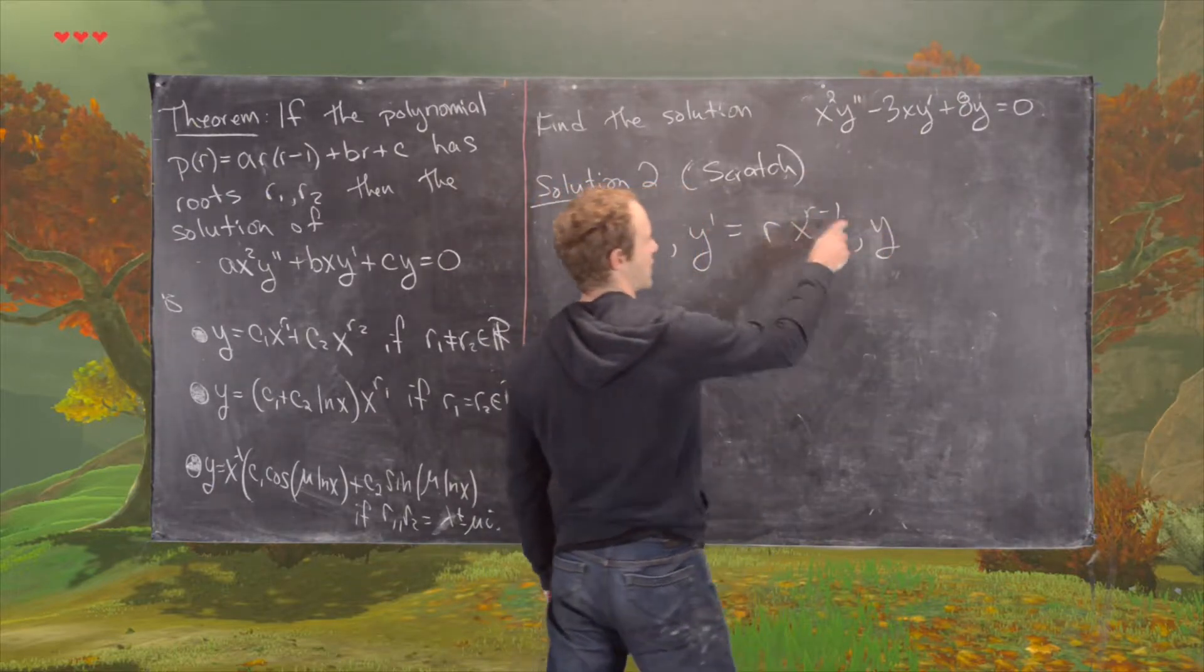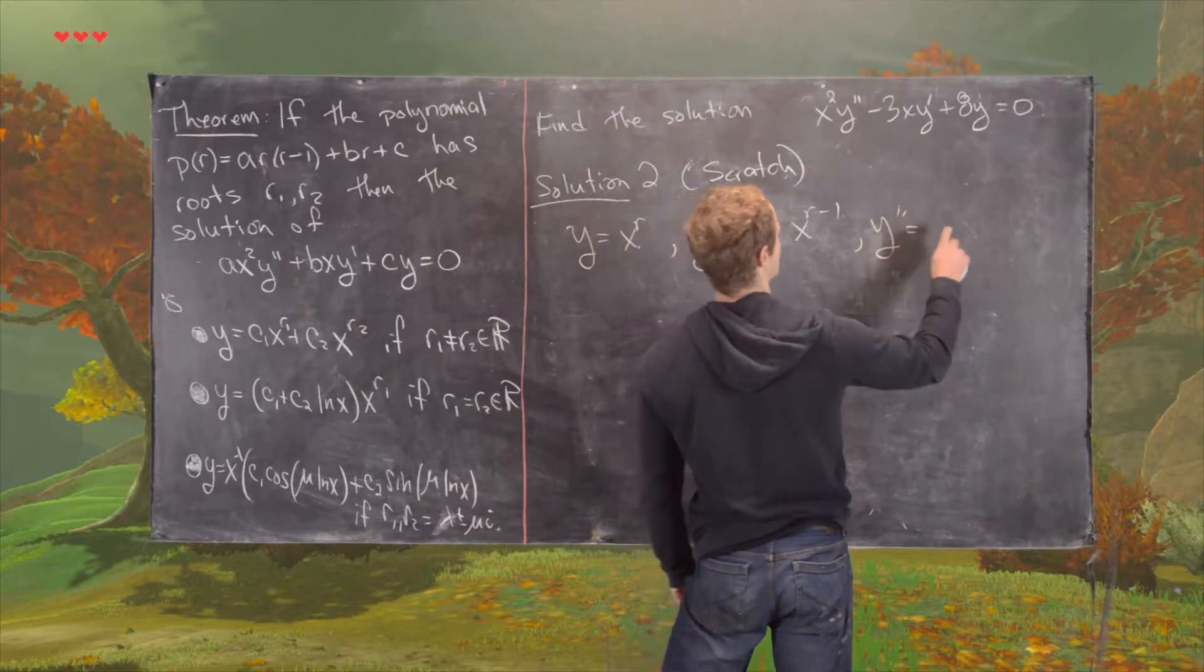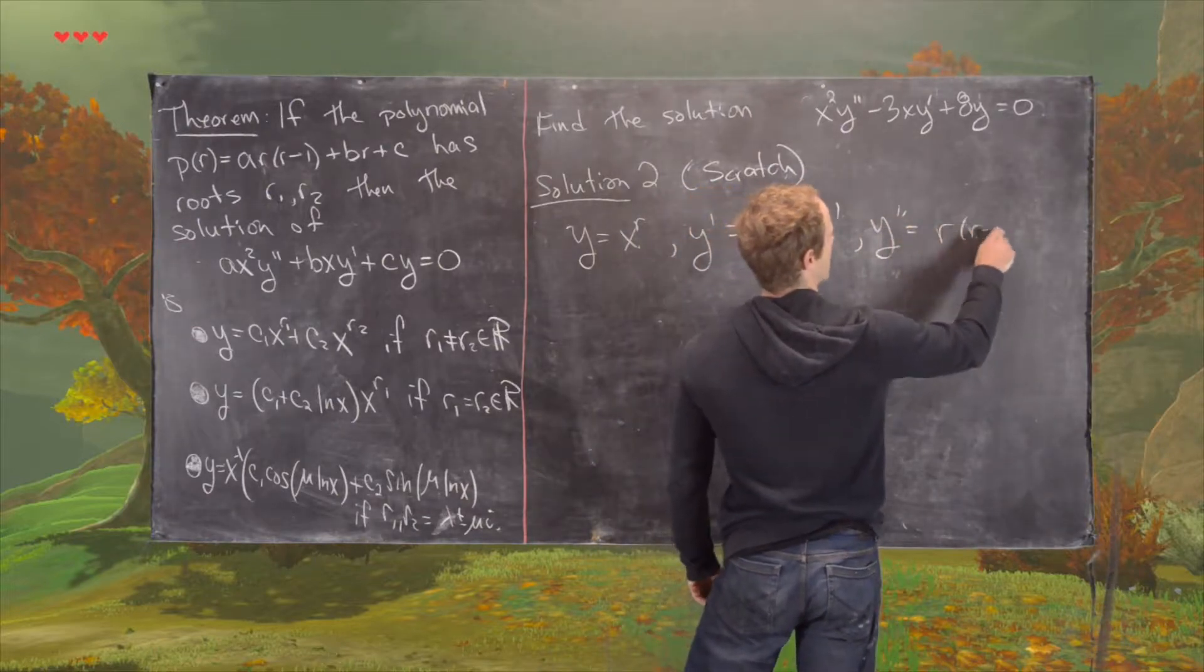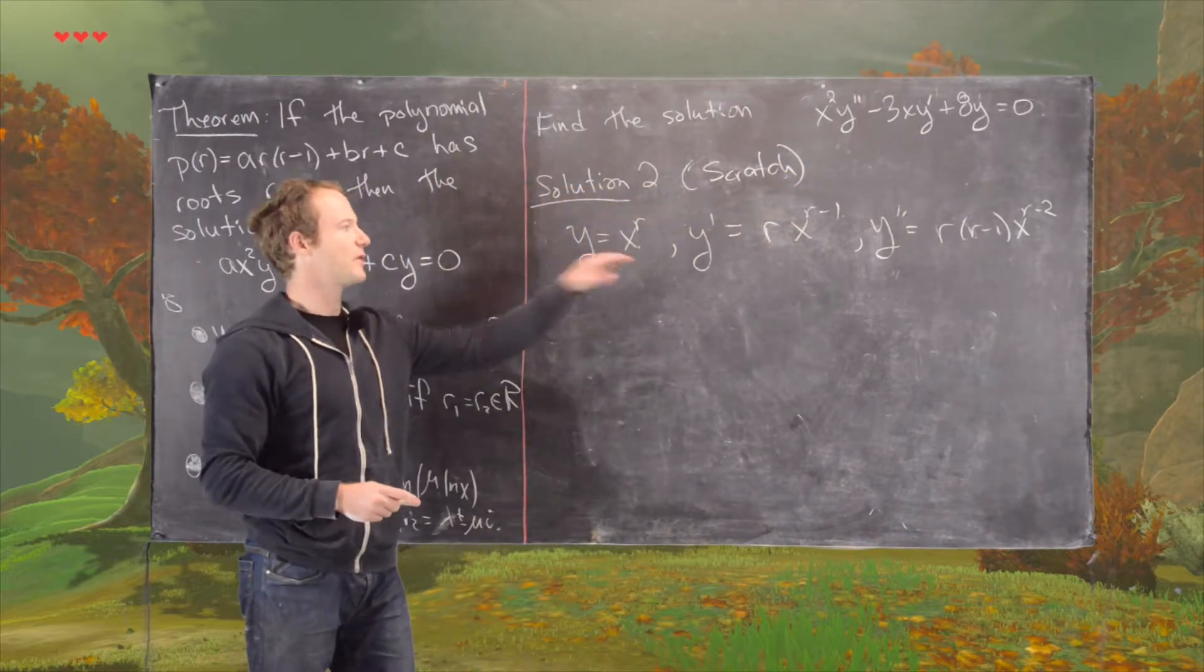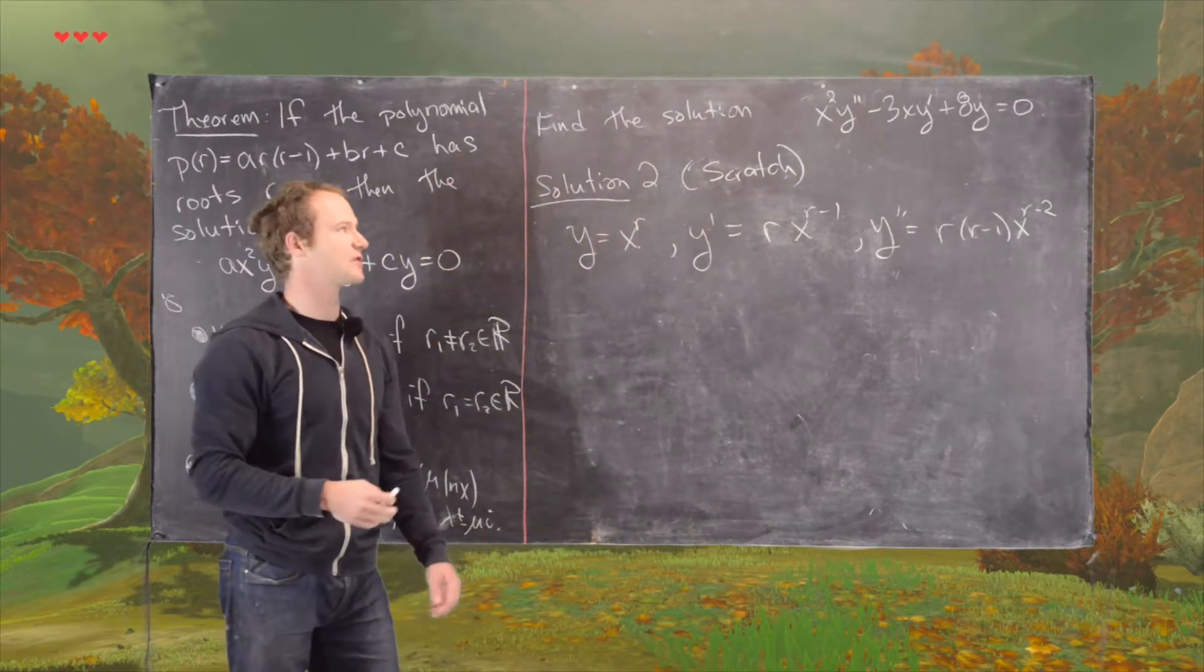So y prime is r x to the r minus 1, and y double prime is r times r minus 1 times x to the r minus 2. Now we plug those three things into the differential equation.